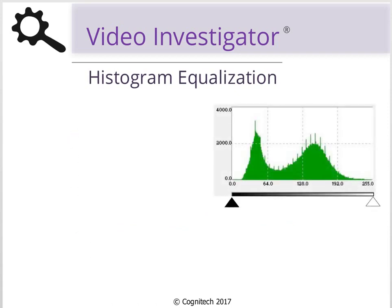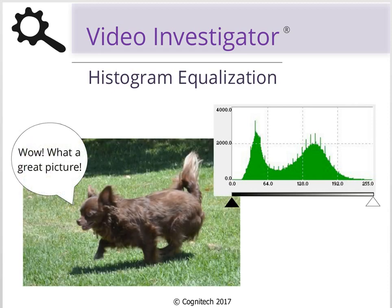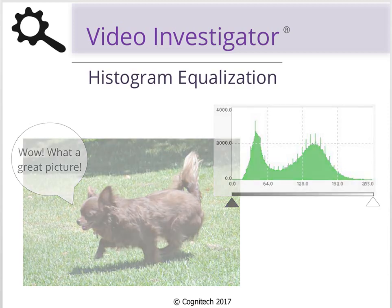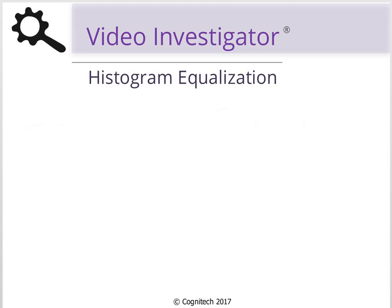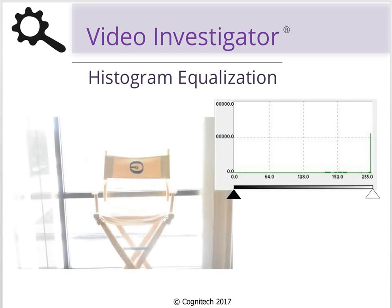By looking at this histogram, we can see that tonal values for this image are fairly evenly distributed. We should therefore expect the image to have a good balance of lighting and contrast — and we would be correct. This histogram shows that most of the pixel values are concentrated in the extreme bright areas of the image, so it's no surprise that our image is almost entirely overexposed.